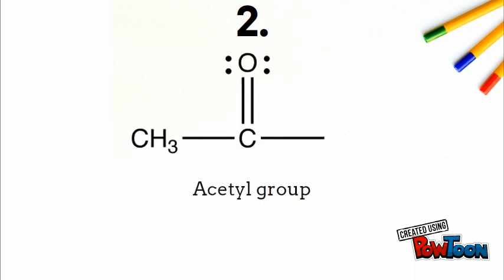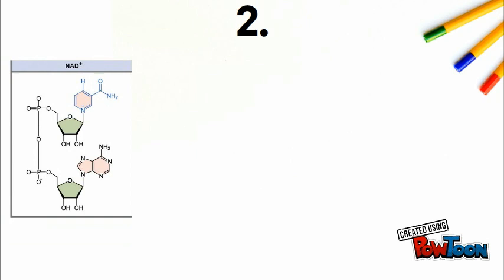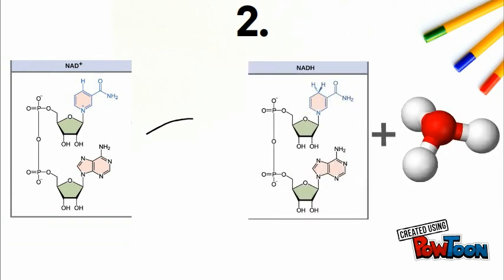In this second step, the two carbon molecules left from step one are converted into an acetyl group. Two electrons and protons are also transferred to NAD+ to form NADH, as well as a hydrogen ion.